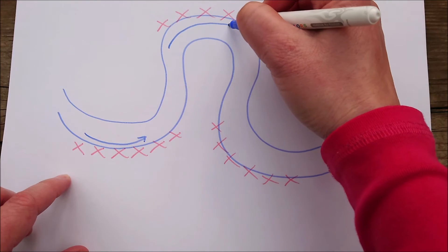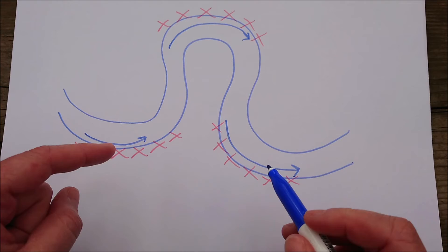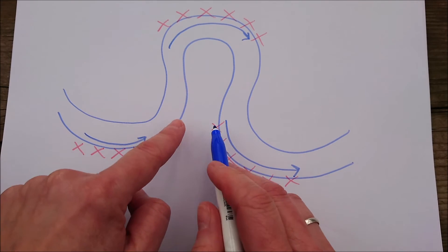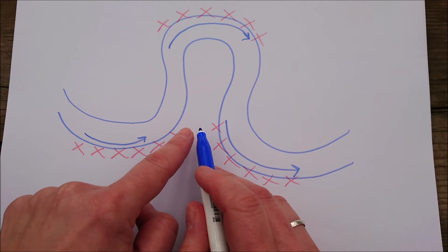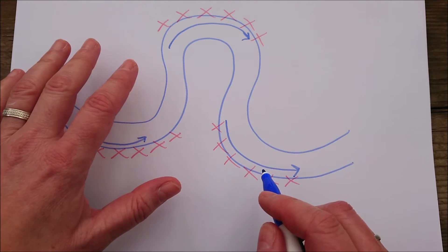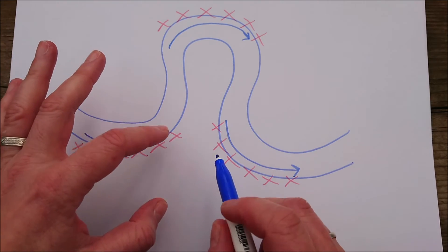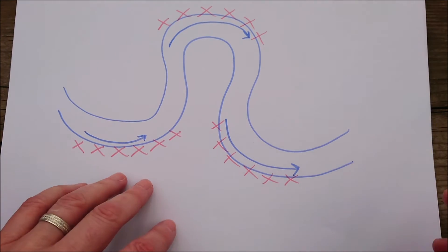Now it isn't going to take very long for these two meander bends here to join together and meet one another. And that might happen during times of high flow, or when there's been a flood, or just times when the river is a little bit stronger, and those two bits have come so close together.